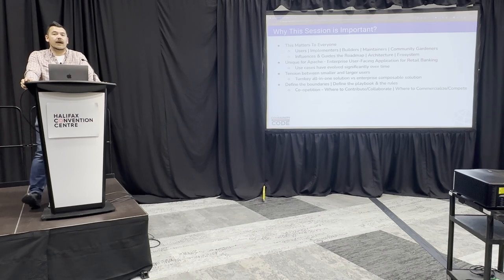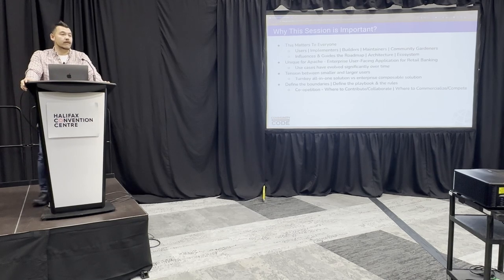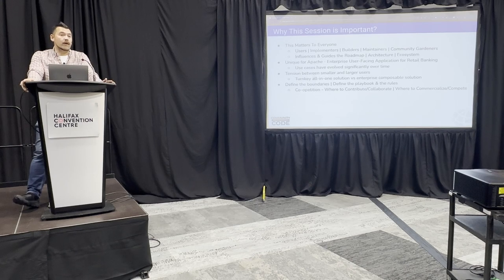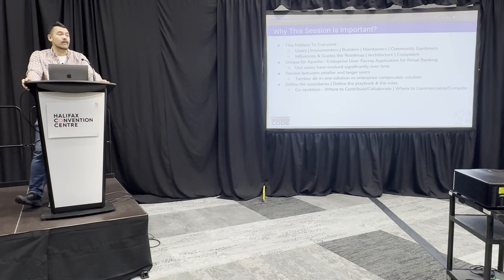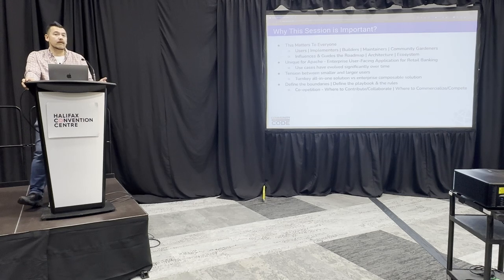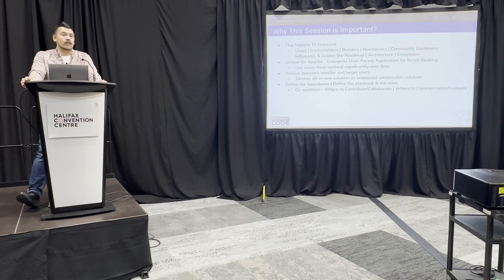We're quite unique for Apache in terms of having an enterprise-level user-facing application. There's a distinct dynamic between small users who want a turnkey all-in-one solution and larger enterprise institutions that want a more unbundled solution where they build out more around the core. Around the ecosystem, a key part of our mission toward reaching 3 billion underbanked people is creating a virtuous cycle with large upstream contributions to the core, while demonstrating that around the core there's a large set of opportunities to commercialize and differentiate — creating this culture of coopetition.